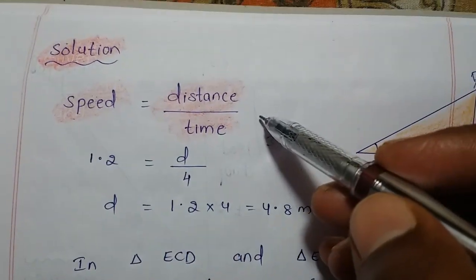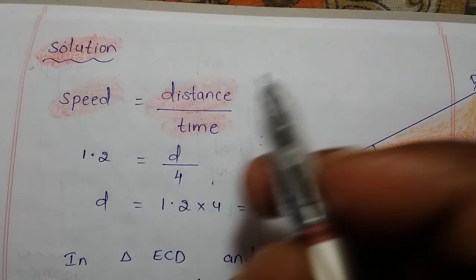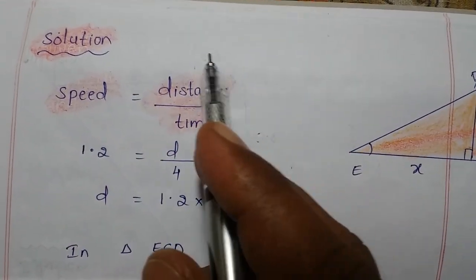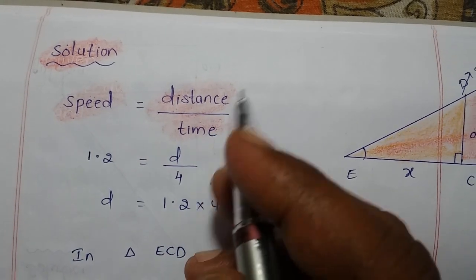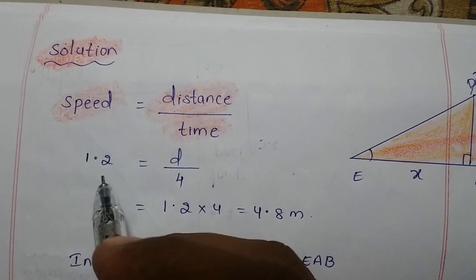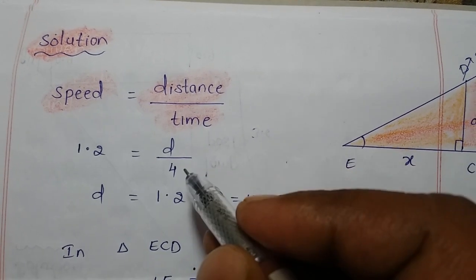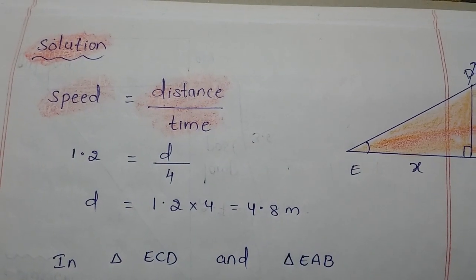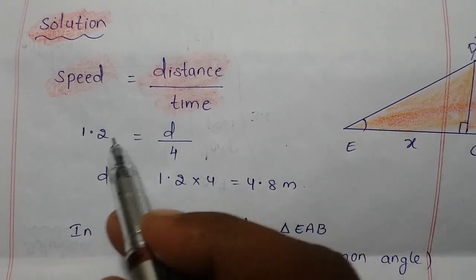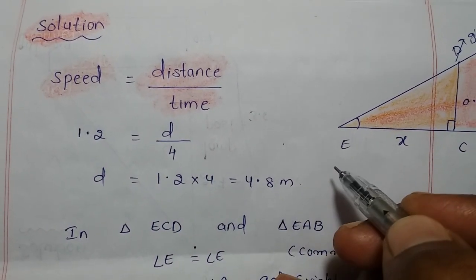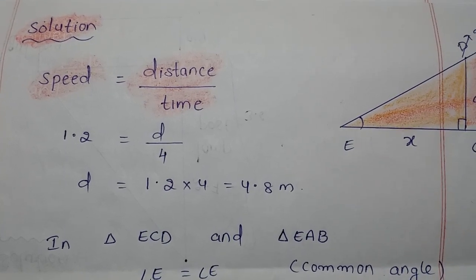First, we calculate the distance traveled using the speed formula: speed = distance / time. Speed is 1.2 m/s and time is 4 seconds. So distance = 1.2 × 4 = 4.8 meters. She traveled a distance of 4.8 meters in 4 seconds.